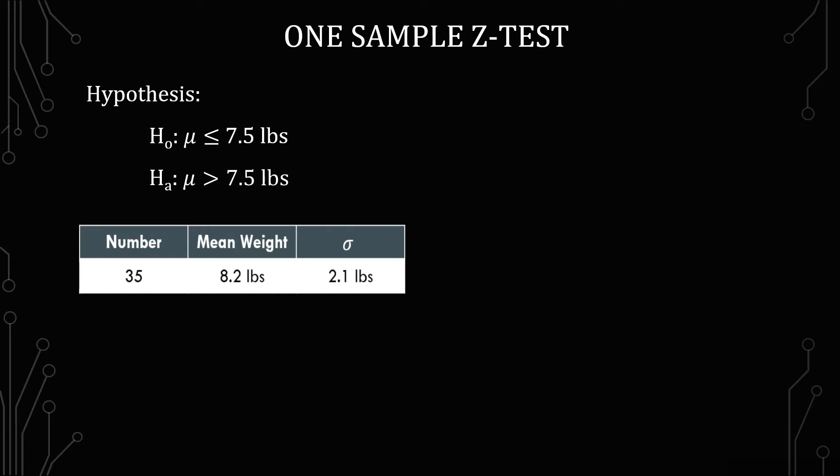Instead of listing all the 35 different weights, I've just consolidated and given you the mean weight as well as the standard deviation. I'm establishing here that this is going to be a 95% confidence level test with an alpha or a type 1 error rate of 5% or 0.05. So if we want significance, the p-value is going to have to be less than 0.05.